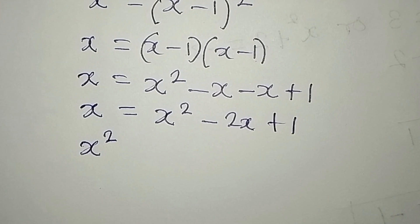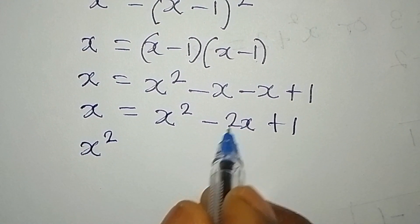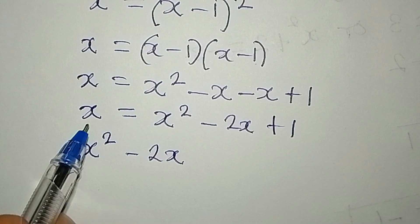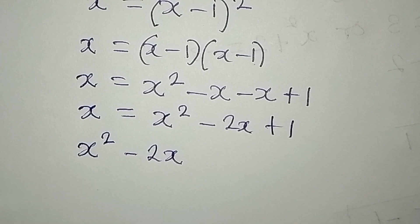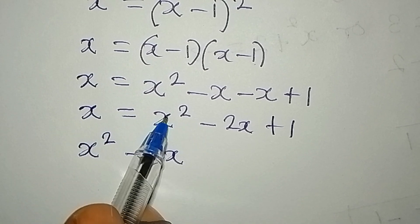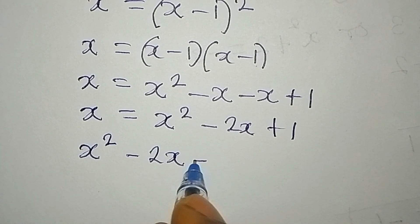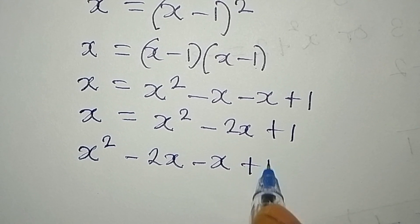And then we have this, which is minus 2x. Then this is x on the other side. Since it is coming to meet with this, it becomes negative x. Then we have plus 1, which is equal to 0.